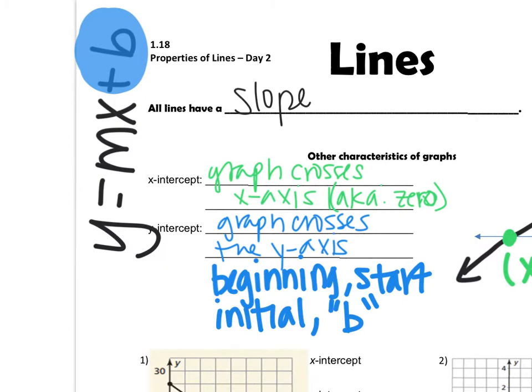So in our equations that we've been solving for y, this number that's by itself is our b-value. It's our y-intercept. It's our beginning.